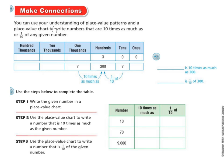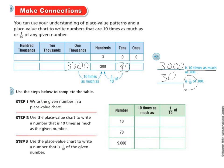You can use understanding of place value patterns and place value charts to write numbers that are 10 times as much as or 1 tenth of any given number. Here I have 300. The tens are 1 tenth of 300, and the thousands are 10 times as much as 300. So 3,000 is 10 times as much as 300, and 30 is 1 tenth of 300.